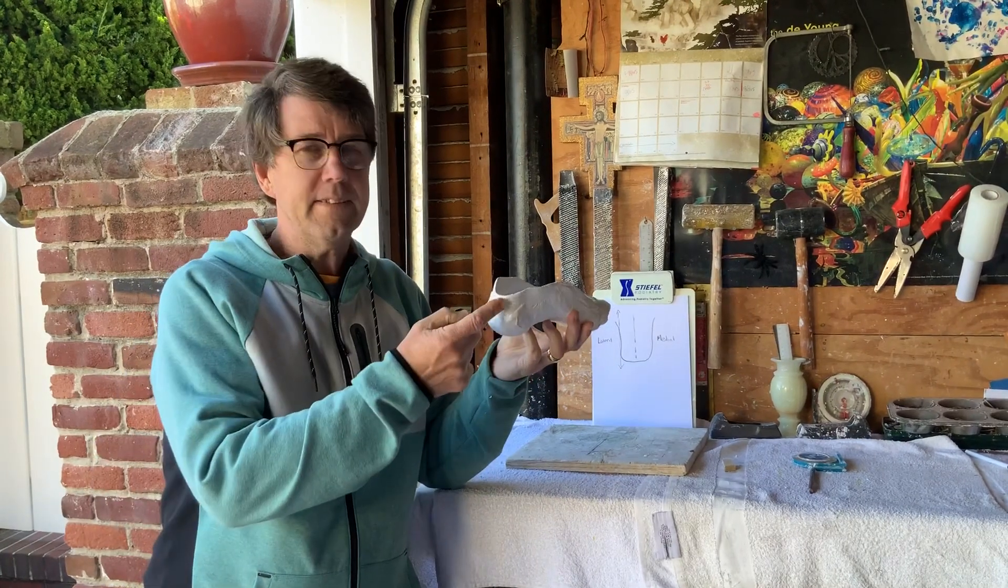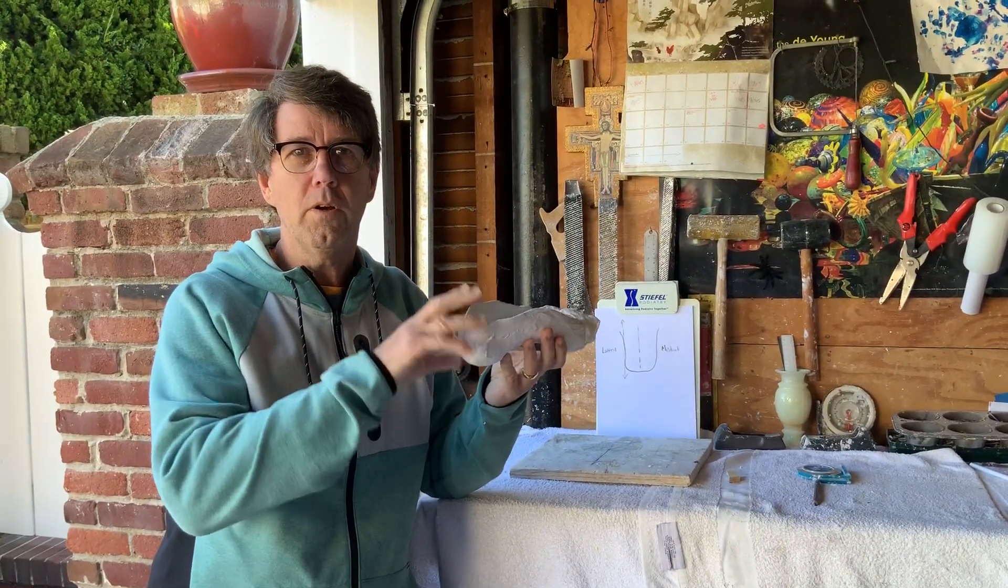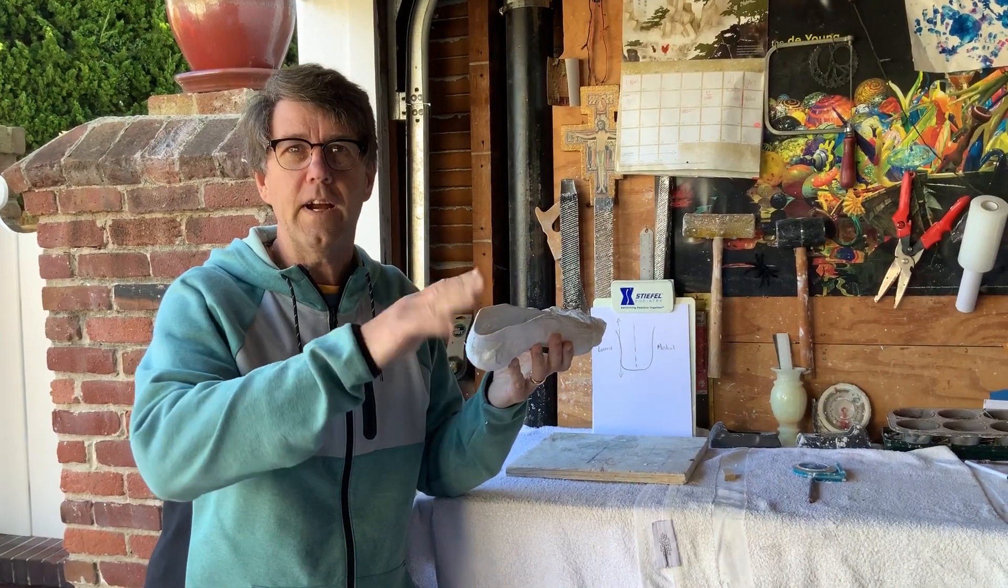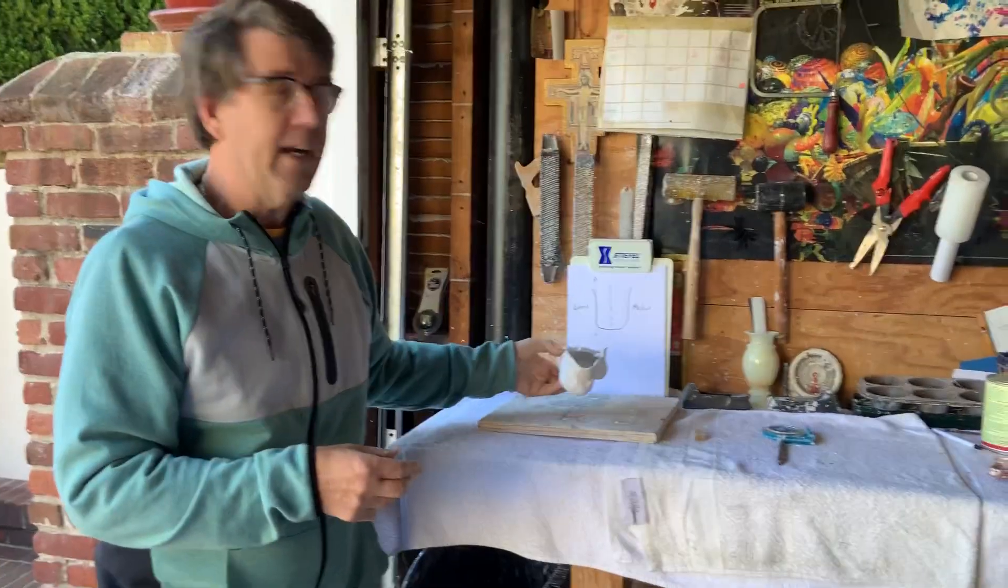The bisection of the heel is our reference point to whether the foot has a forefoot varus or forefoot valgus deformity.